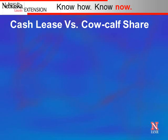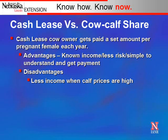In a cash lease arrangement, the cow owner gets paid a set amount per pregnant female each year. The advantages are that they have a known income, it's less risk to them, it's simple to understand, and they get a guaranteed payment. This payment can either come as half up front when the cows are leased and half at the end of the year. The disadvantage to the cow owner is that they're going to get less income when calf prices are high, such as in 2014.